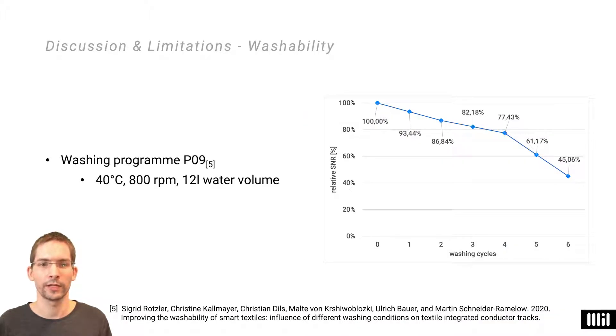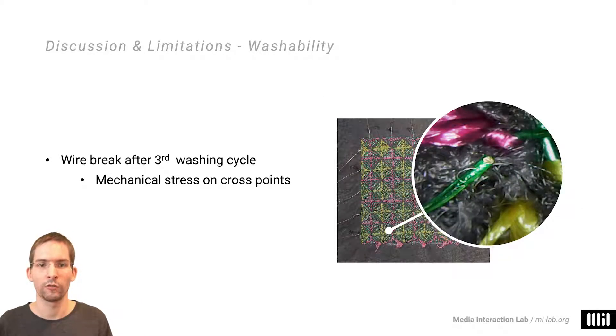We also evaluated the impact of washing on the sensor's performance. The washing program was chosen specifically to put high amounts of mechanical stress on the textile under test. We noticed a considerable decline of sensor quality with each washing cycle. Furthermore, wire breaks started to occur after the third washing cycle. Locations of wire overlaps proved to be the weak spots.